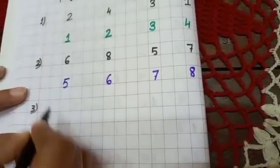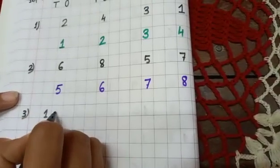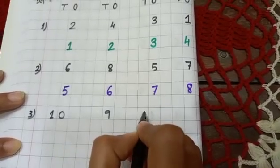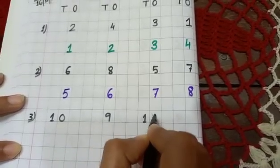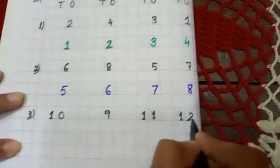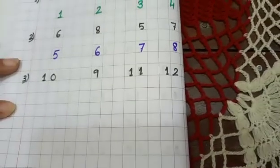Now next one. Number 3. Number 3 I am writing here. 10, 9, 11, 12. So rearrange. Which one will come first?